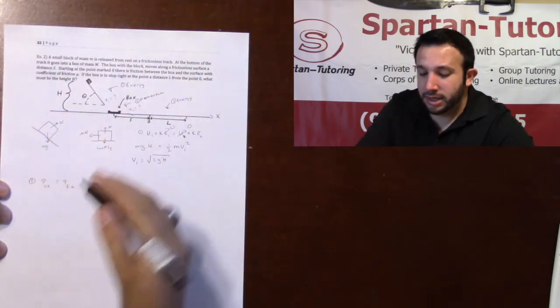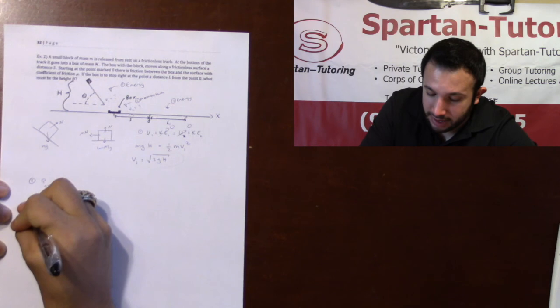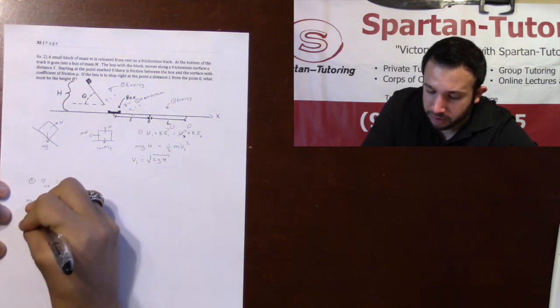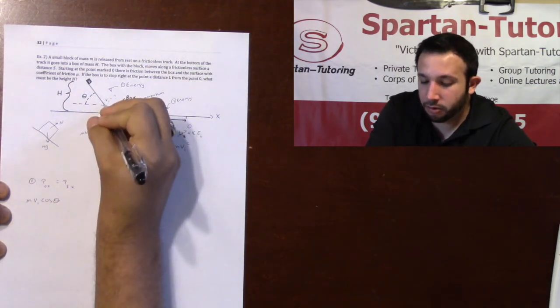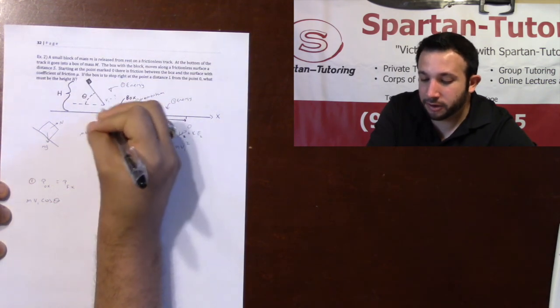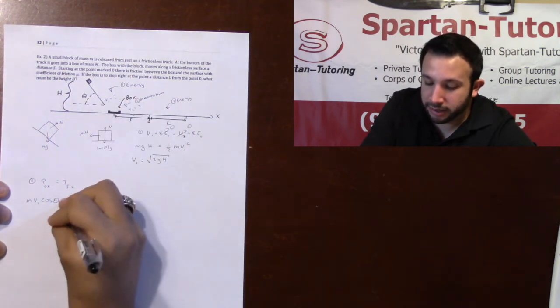And so initially, in the X direction, that M has a velocity V1 cosine theta. That would be the X component of that final velocity V1 right before I strike the box.